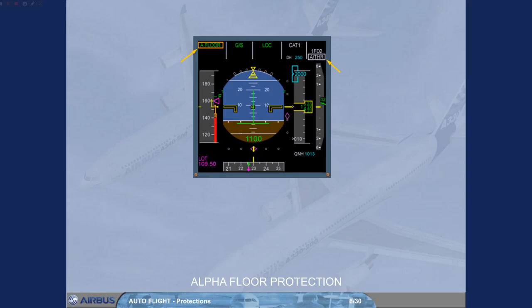The alpha floor function is available from lift-off down to 100 feet radio altimeter. Note: the alpha floor protection is lost in case of engine failure or autothrust failure. See your FCOM.